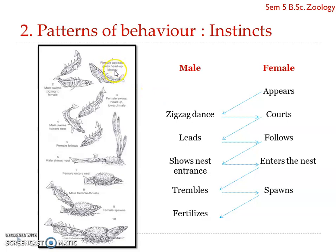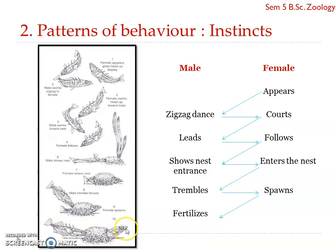In summary: the female appears and gives a head-up display; the male shows a zigzag dance; the female swims head-up towards the male; the male leads the female while she follows; the male shows the tunnel entrance; the female enters inside; the male trembles-thrusts the posterior part; the female spawns; the male enters and fertilizes the eggs. It is the duty of the male to guard the nest and young ones from enemies. This is typical instinctive behavior in *Gasterosteus aculeatus*, the three-spined stickleback.